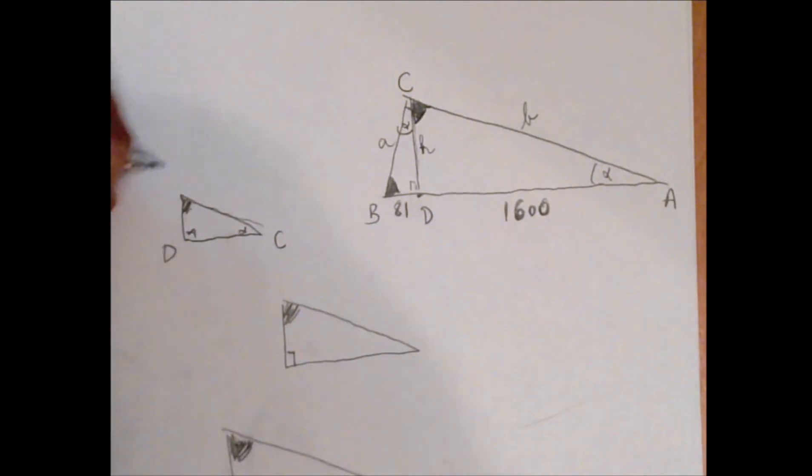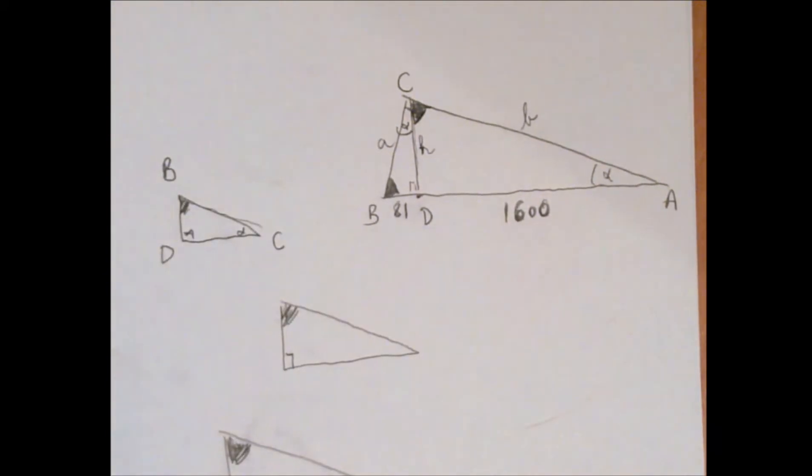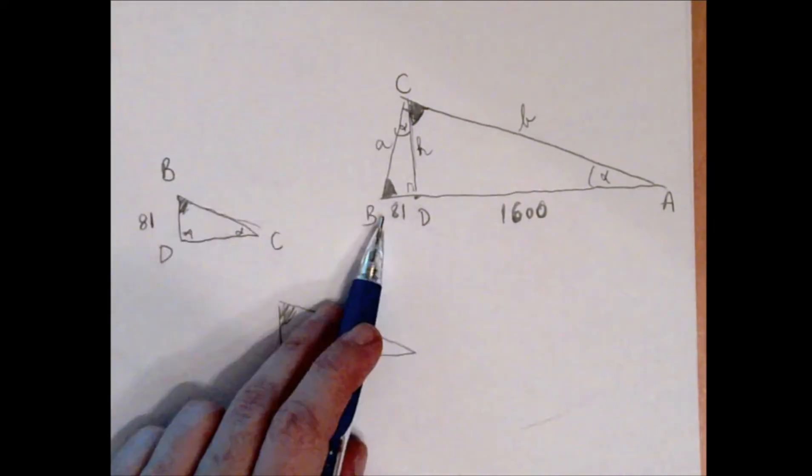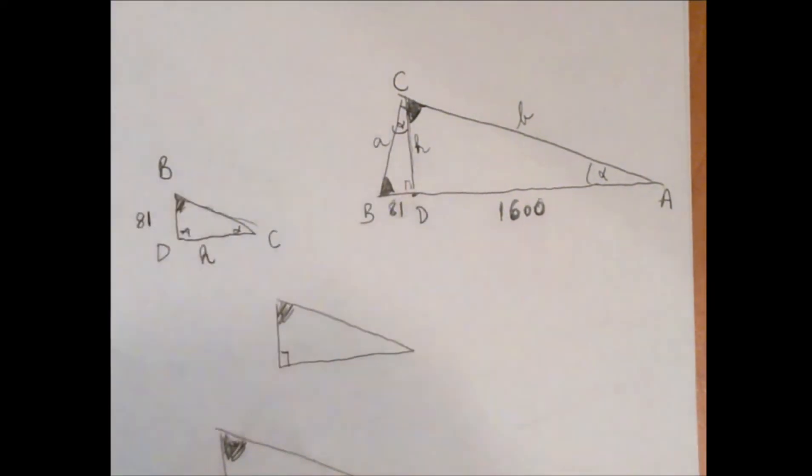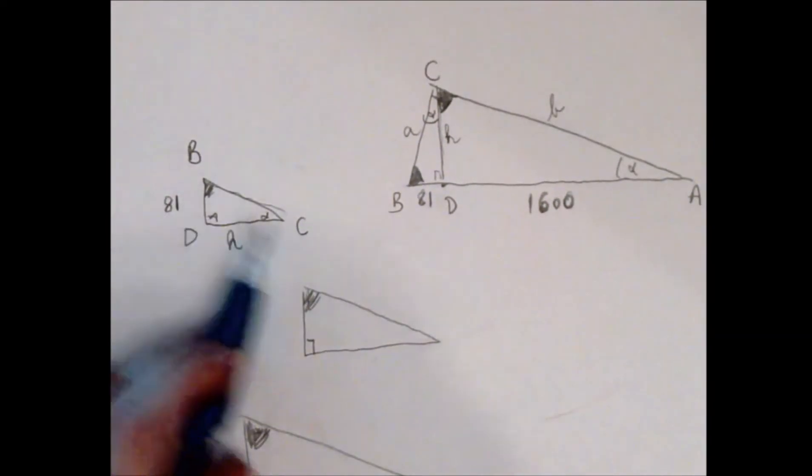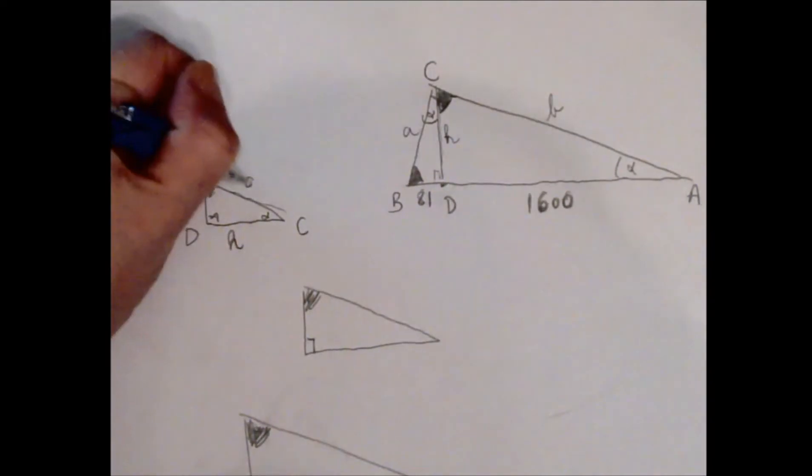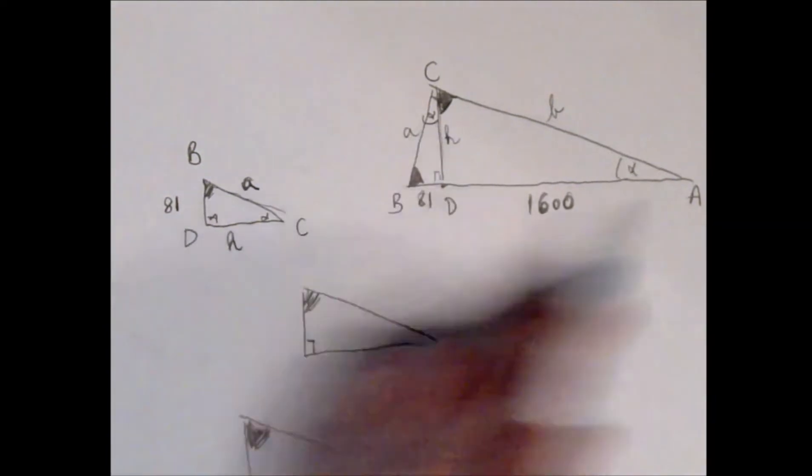In this little triangle, beta is at point B. Now we can figure out the sides using the points. BD was labeled 81, DC is the height labeled h, and BC is the side labeled a.